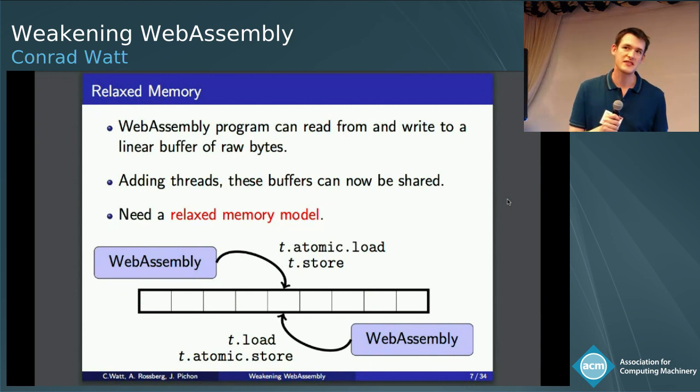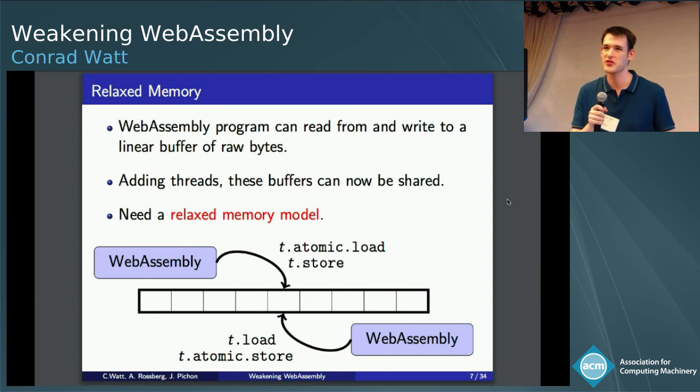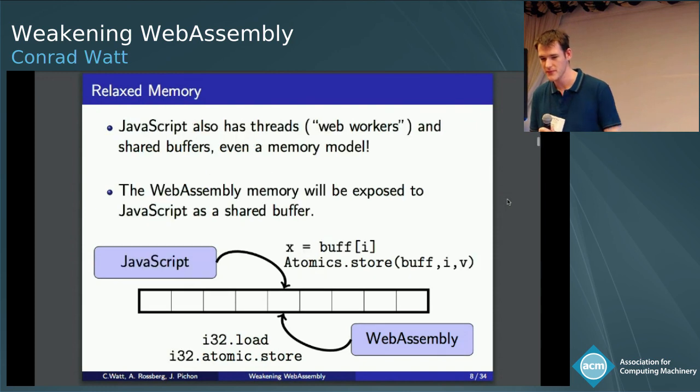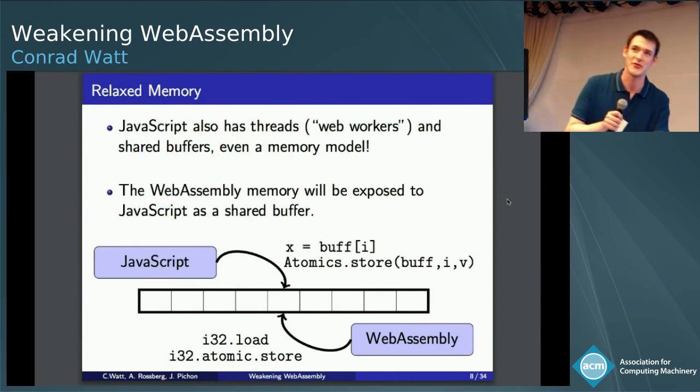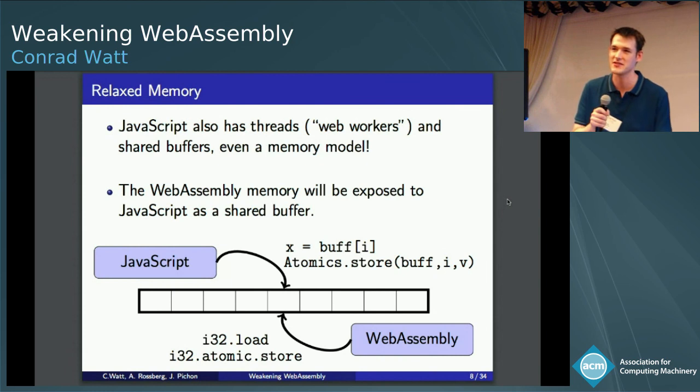So now in a world of threads and concurrency, you still have this linear memory, but now you have multiple threads reading and writing to this linear memory. And this just instantly exposes relaxed behaviors. So in order to properly specify threads and concurrency, we're going to need a relaxed memory model. And now I'm going to terrify you, because it turns out JavaScript actually already has threads.